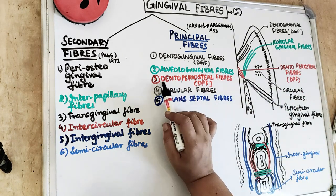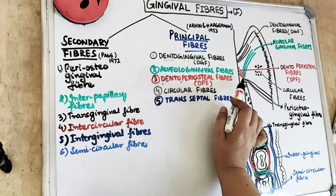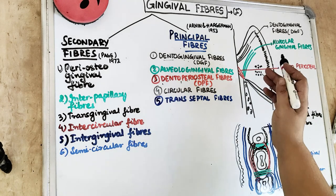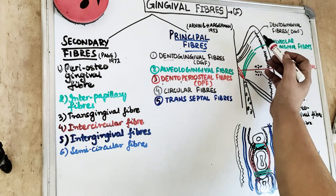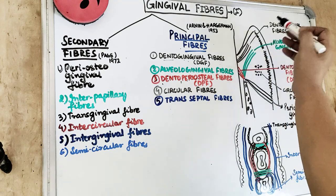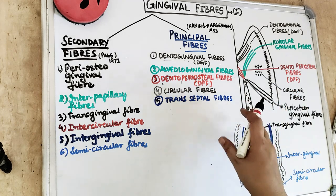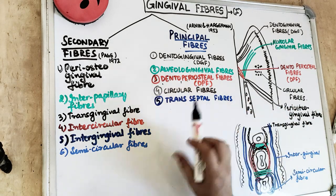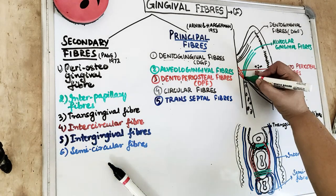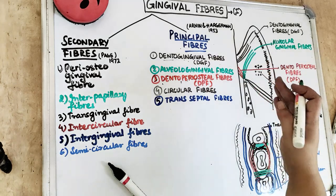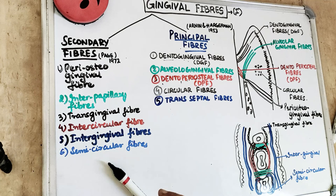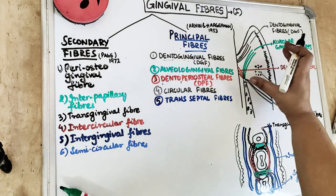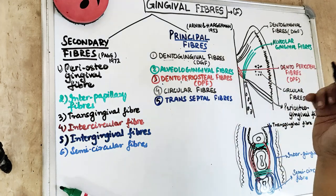Dento-periosteal fibers are the fibers coming from the teeth and going into the periosteum of the bone. Dentogingival fibers come from the cementum and in a fan-like pattern merge into the free gingiva on the facial, lingual, and interproximal regions. As for the alveologingival fiber, as the name suggests, these fibers come from the alveolar crest, going into the gingiva, inserting coronally into the lamina propria, attaching the gingiva to the alveolar bone.